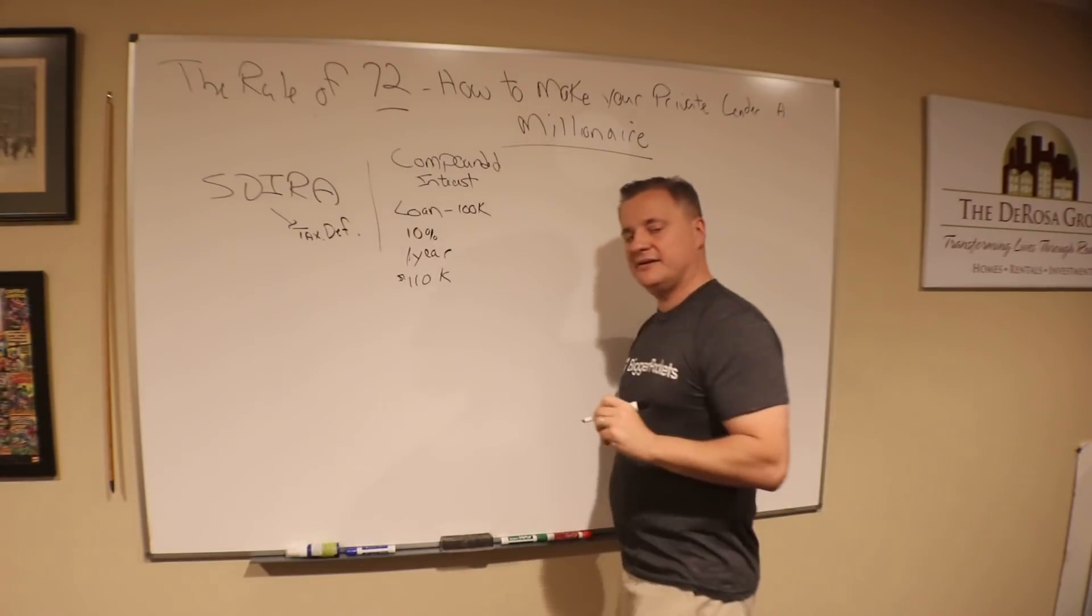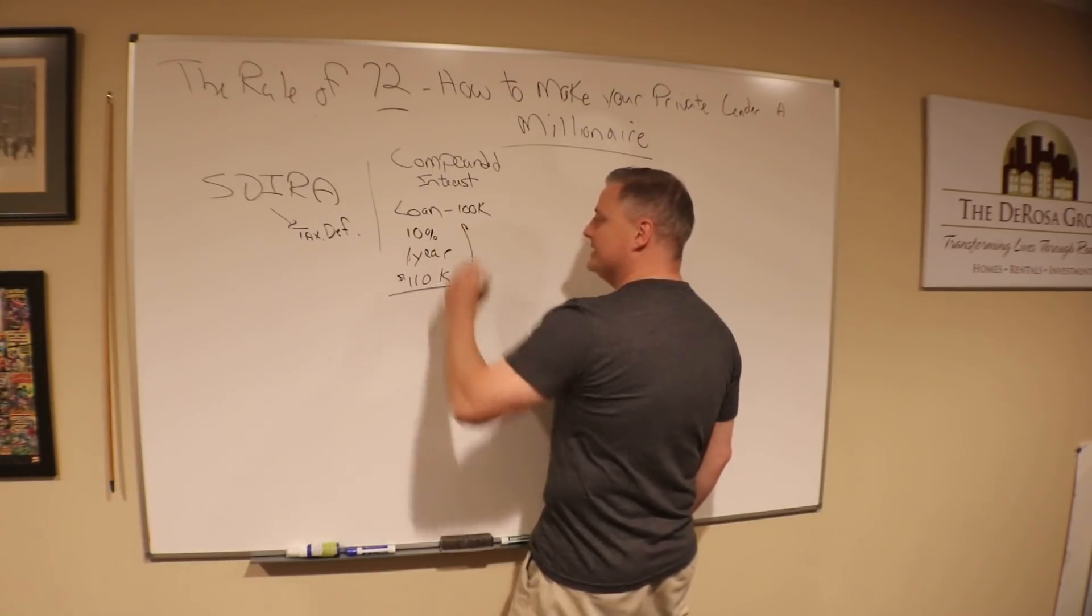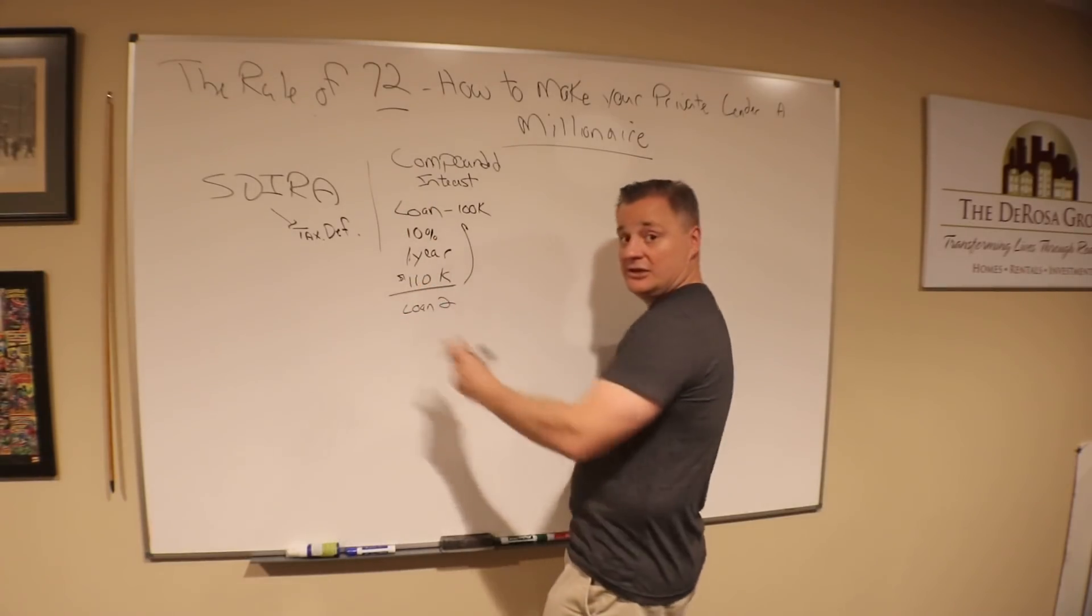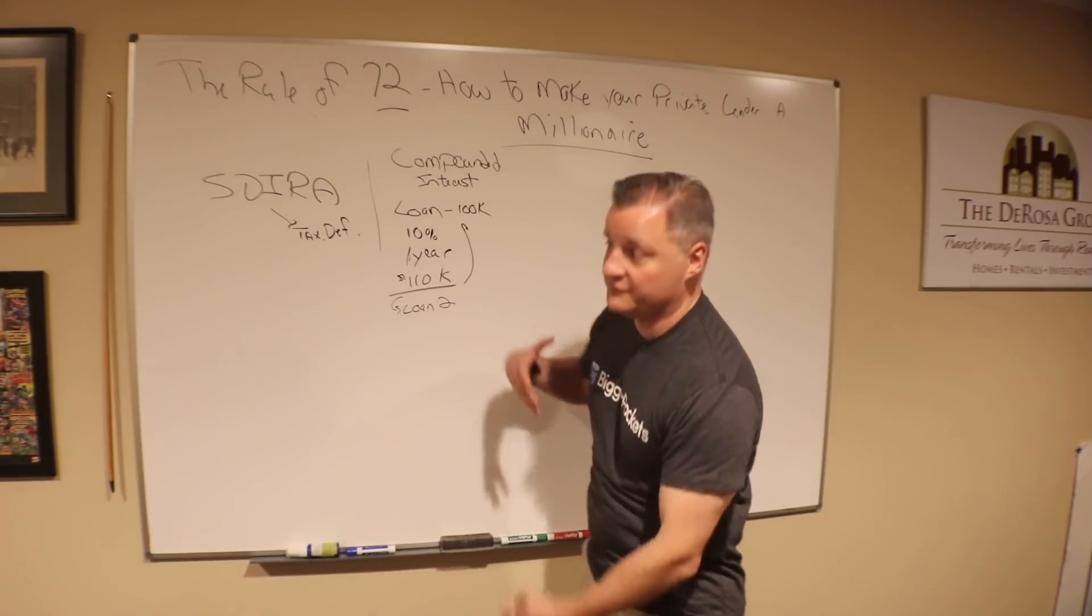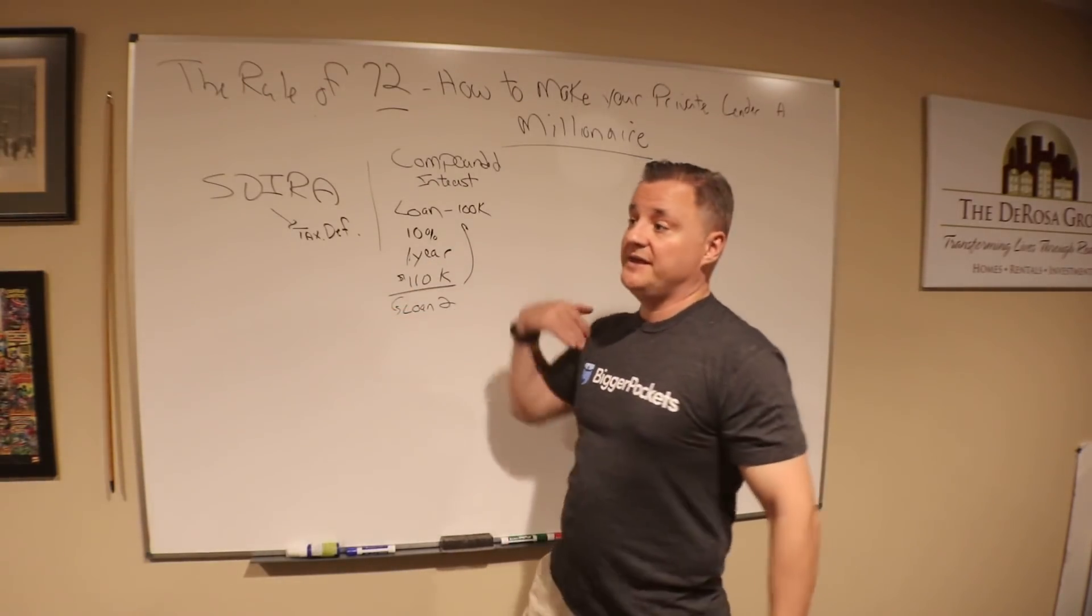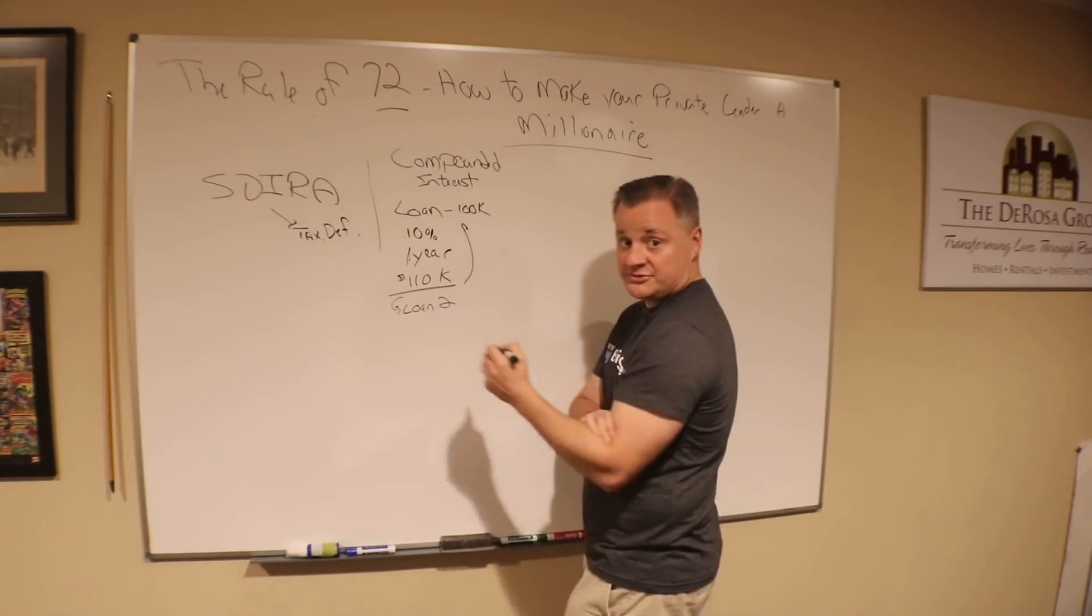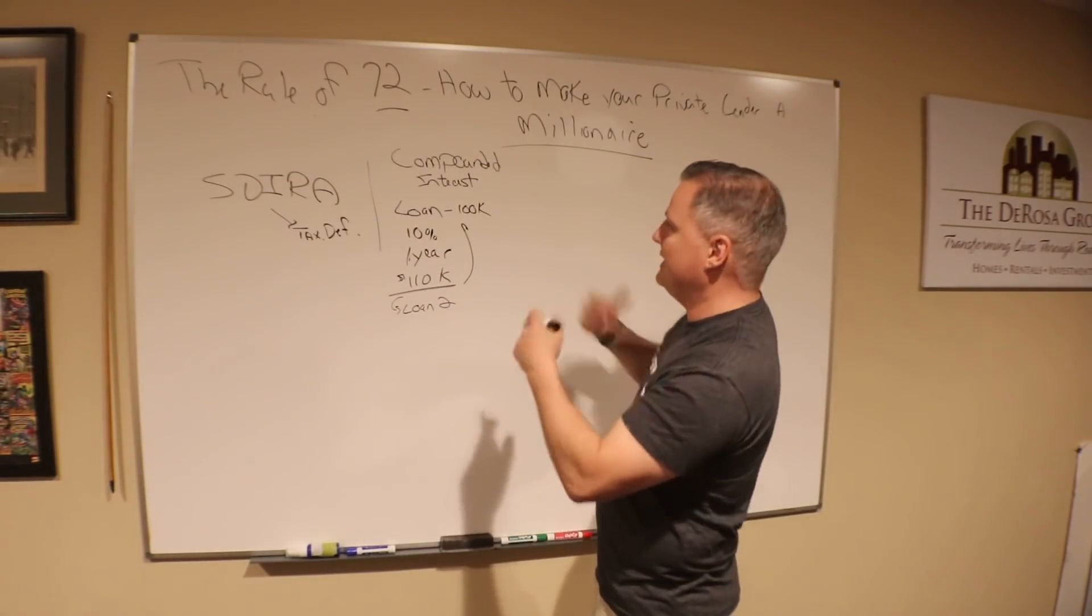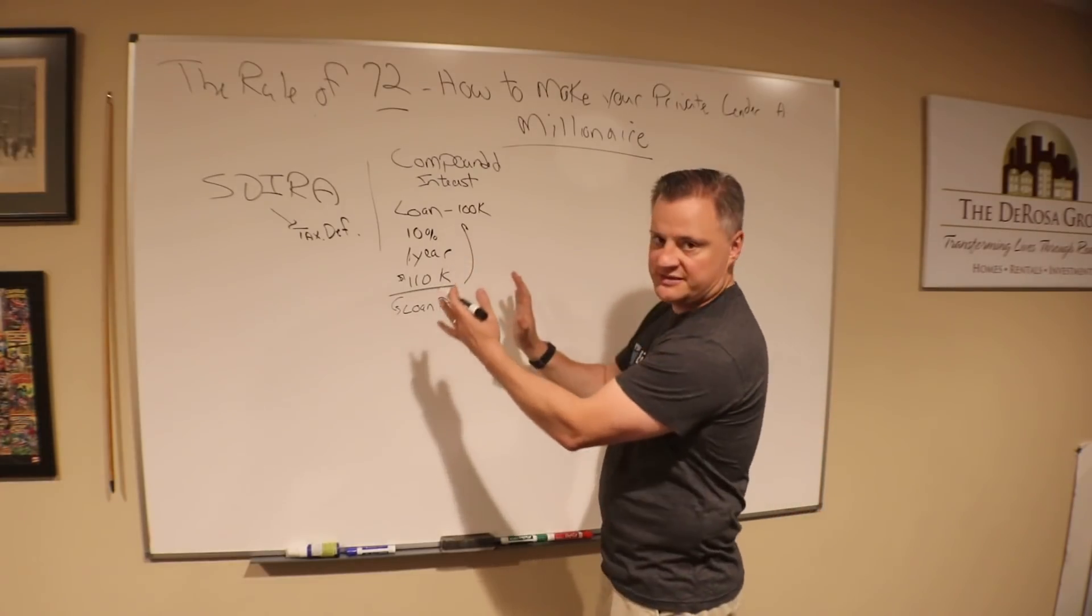So $100,000 for 10% for one year means at the end of one year, you owe them $110,000. Now compound interest works like this: they take that $110K and put it back into another loan with you. This is loan number one, and then you've got loan two. That $110K gets put into that second loan. You borrow it again for another flip or BRRRR property, and you keep handing that money back and forth. It's important for them to reinvest all the interest because that allows the $10,000 in interest to start earning interest on top of itself. That's compounded interest—making profit on their profit.